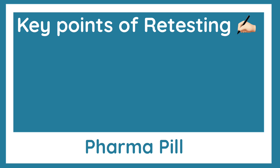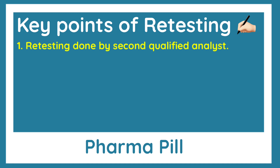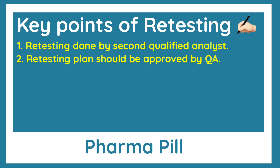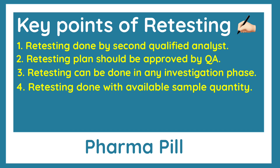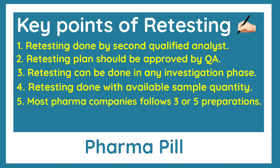There are a few key points related to retesting which you should always keep in mind. Retesting is always done by the second qualified analyst. Before proceeding for the retesting, it should be approved by quality assurance. Retesting can be done in any of the phases during OOS investigation. Retesting is always done with the existing available sample quantity. If the sample quantity is not sufficient, then resampled quantity is used.